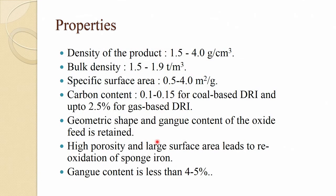After this numerical, let us see about the properties of the DRI. Usually the density of the product ranges between 1.5 and 4 grams per centimeter cube, or 1500 to 4000 kg per cubic meter. Bulk density is 1.5 to 1.9 ton per cubic meter. Specific surface area is about 0.5 to 4 square meters per gram.